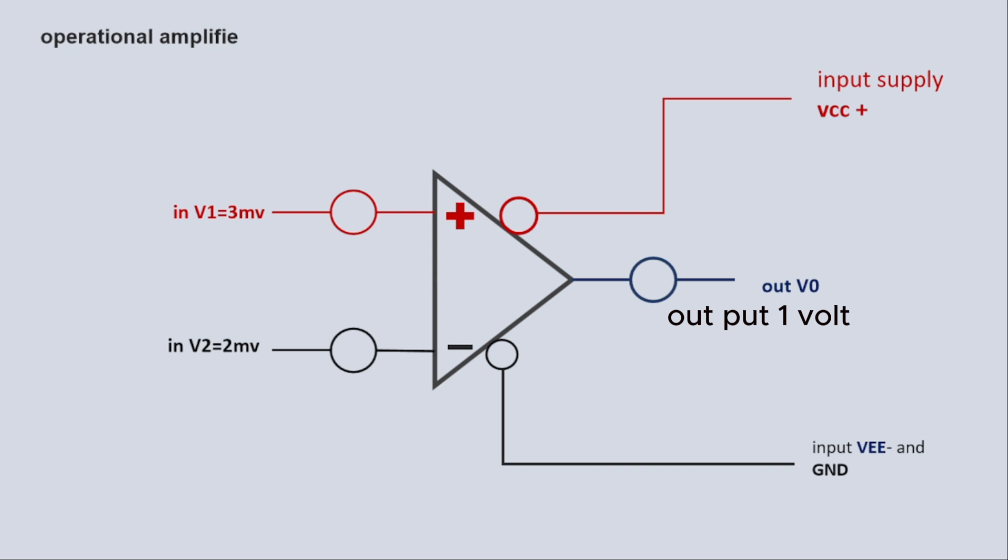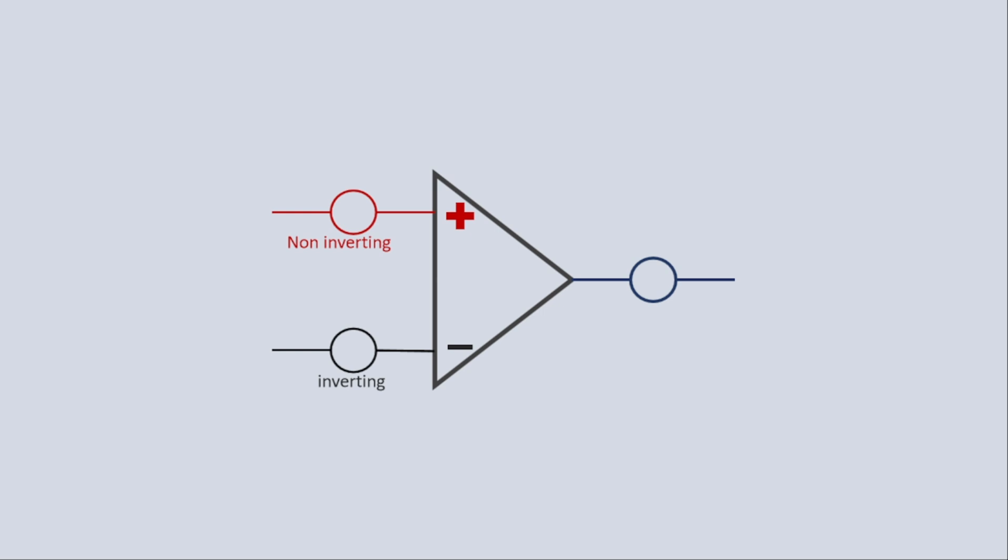We have understood the differential amplifier through volts. Let's try to understand the signal. This will be our double supply amplifier, positive voltage and negative voltage.